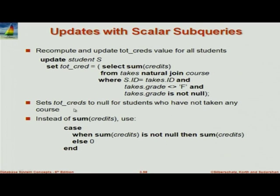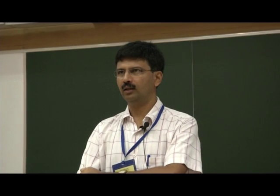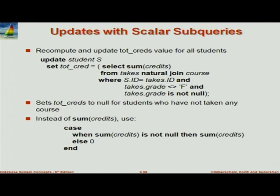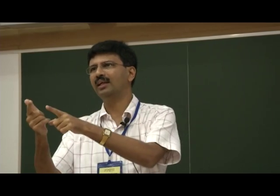There is one slight glitch: if somebody has not passed a single course, what is the sum of an empty set? It will be null. If you want it as 0, you can use a CASE statement — instead of sum(credits), say: CASE WHEN sum(credits) IS NOT NULL THEN sum(credits) ELSE 0 END. In Oracle, there is an NVL function. SQL itself has COALESCE: it takes a list of values and returns the first non-null value. So I could say COALESCE(sum(credits), 0) — if sum(credits) is not null it returns that, otherwise it returns 0.